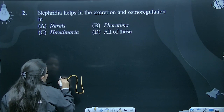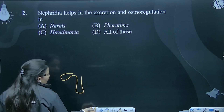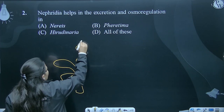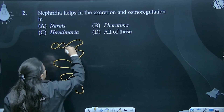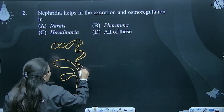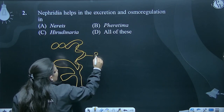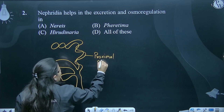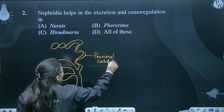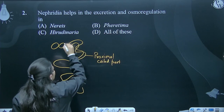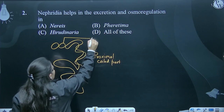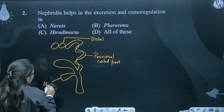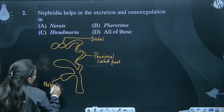This is the nephrostome part. This is the nephrostome — it looks somewhat like this. This is the coiled structure. This is the proximal coiled part, and this one is the distal part. This is the nephrostome.